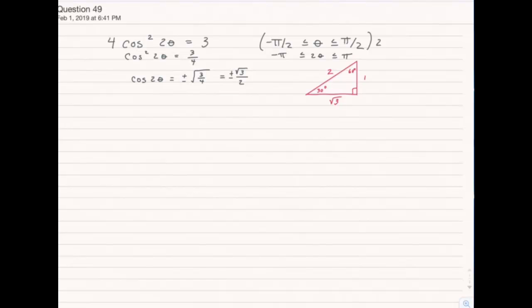So if I'm looking for cosine equal to square root of 3 over 2, that's the adjacent over the hypotenuse. It looks like I'm talking about this angle of 30 degrees, which in radians is pi over 6.